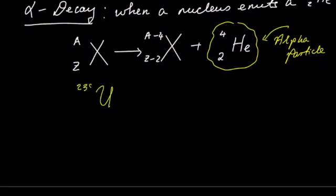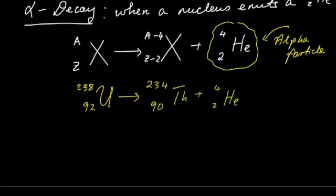An example of this would be radium-238 with 92 protons, which decays to thorium-234, and an alpha particle, which is just a helium atom.